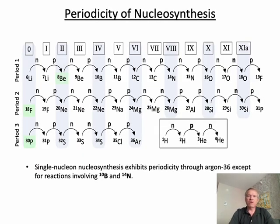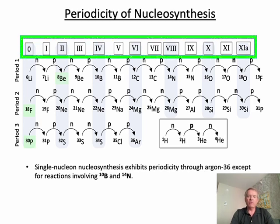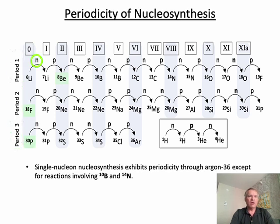A second periodic trend occurs in single-nucleon nucleosynthesis. Now, this periodic table is set up identically to the one in the previous slide, with group numbers across the top and periods across the side. Notice how individual nuclides, the series of stable nuclides, increases one nucleon at a time. This may appear to be somewhat of a random pattern, but there is a pattern. For group 0, for instance, a neutron is added. Group 1, a proton. Group 3, a neutron. You can see the pattern across the table. Now, there are two exceptions. One is transitions involving boron-10 and nitrogen-14.